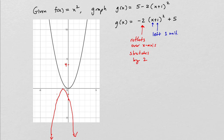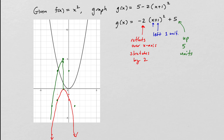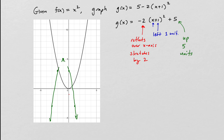Now I want to take care of the last part, which is the + 5. The + 5 simply moves the graph up 5 units. All the other transformations have already happened — that's this graph here. Now we're going to take that graph and shift it up 5 units. And when it's all said and done, this is the final graph for the function g(x).